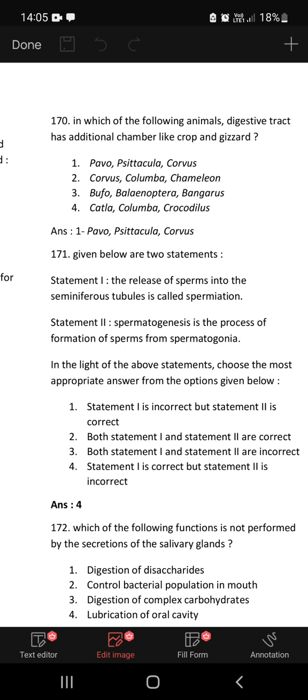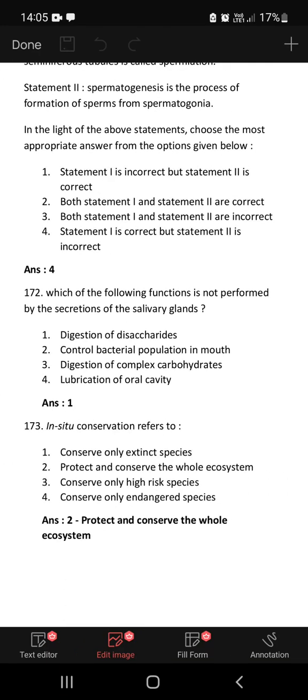In which of the following animal does digestive tract have additional chamber like crop and gizzard? This is seen in birds. The examples here are Pavo, Psittacula, Corvus. All three of them are birds: Pavo is peacock, Psittacula is parrot, Corvus is crow. Statement 1: The release of sperms into the seminiferous tubule is called spermiation. Statement 2: Spermatogenesis is the process of formation of sperms from spermatogonia. Statement 1 is correct but statement 2 is wrong. It should be spermiogenesis, maturation of spermatozoa into sperm.